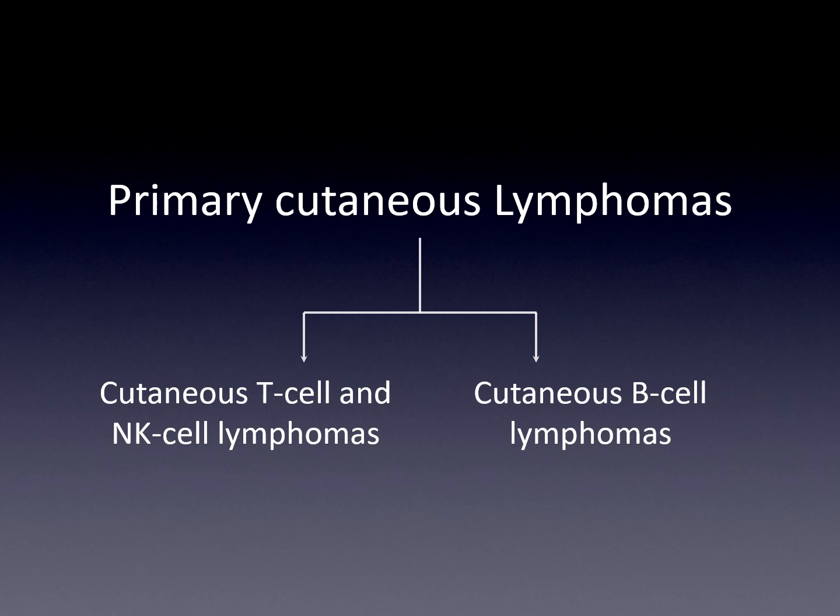Primary cutaneous lymphomas are divided into two main categories: cutaneous T cell and NK cell lymphomas, and cutaneous B cell lymphomas.